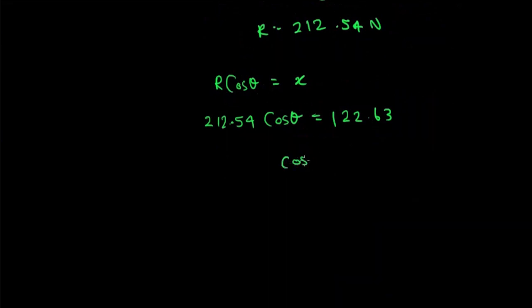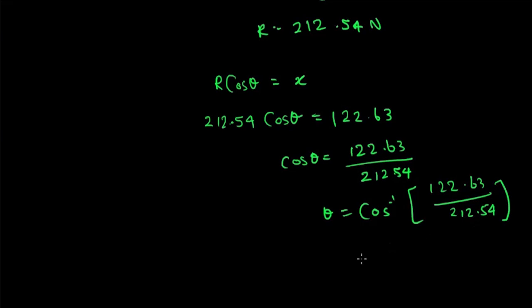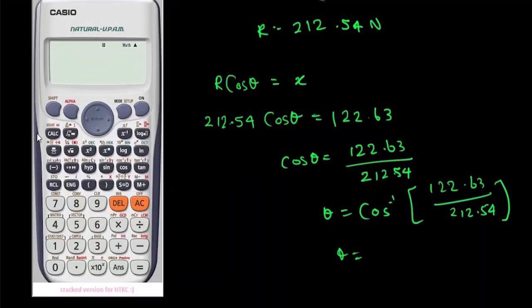Cos theta is equal to 122.63 divided by 212.54. Theta is equal to cos inverse 122.63 divided by 212.54. Let's find out: cos inverse 122.63 divided by 212.54.